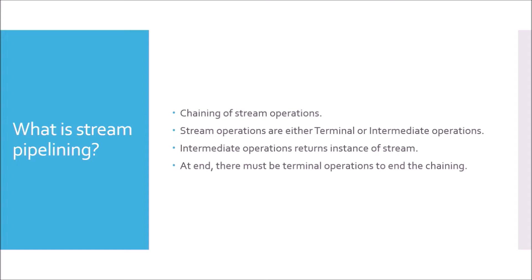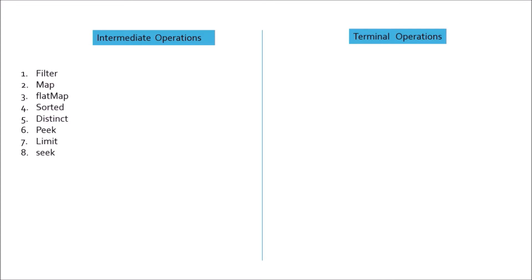At the end of the chaining there should be a terminal operation to execute the process. This concept gives a very important feature: stream is lazy. Sometimes the interviewer may ask you directly why stream is lazy. Before understanding that, let's look at what terminal and intermediate operations are. In intermediate operations, we have: filter, map, flat map, sorted, distinct, peek, limit, and skip.